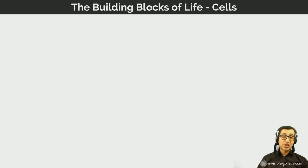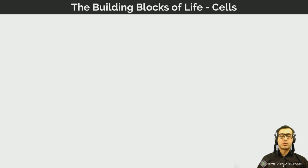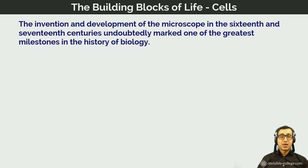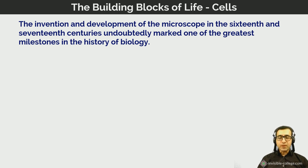Cells are typically referred to as the building blocks of life. The invention and development of the microscope in the 16th and 17th century was one of the biggest milestones in the development of biology, because it was the first time people could actually see that living things were made of these fundamental building blocks. Robert Hooke, a famous English scientist known for discoveries in biology and physics, was largely responsible for some of the earliest advances.